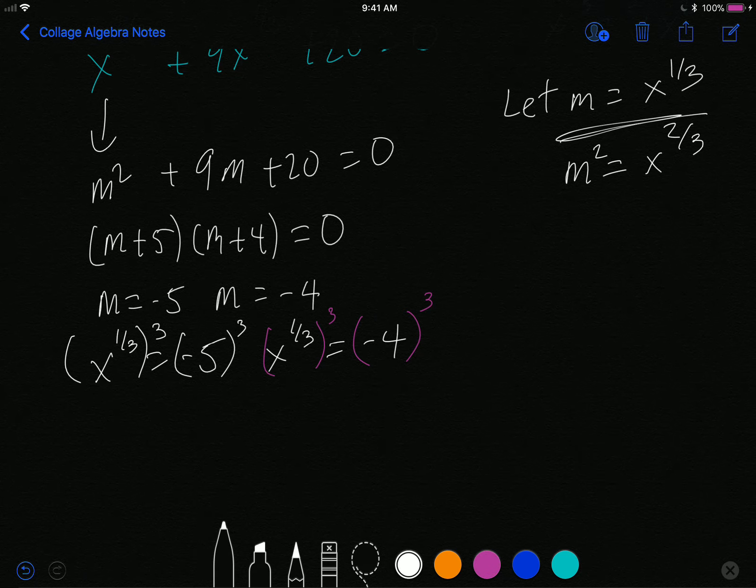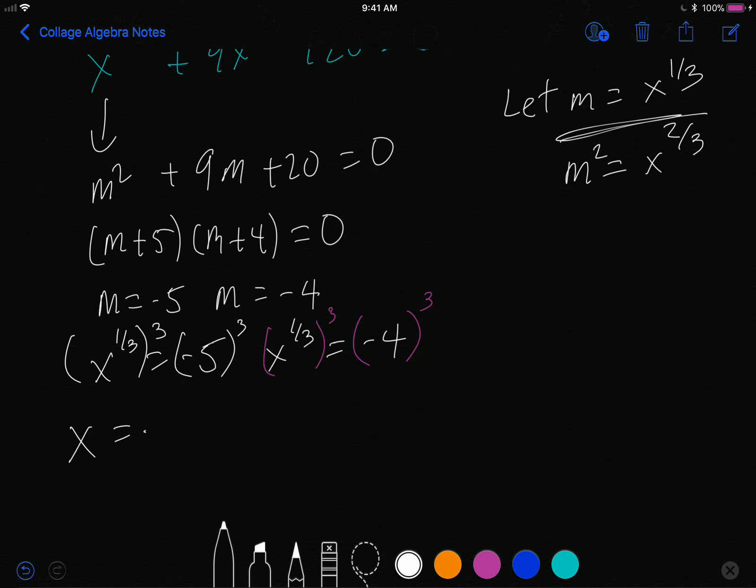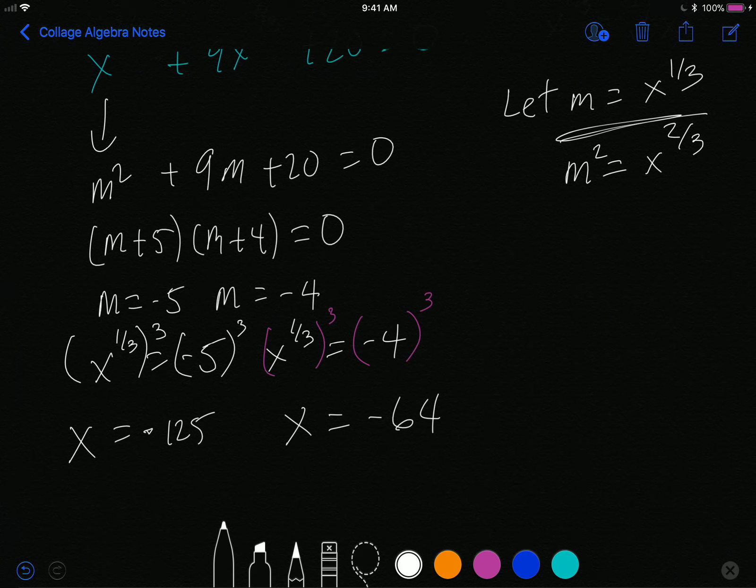And so this simplifies to just x. And that's negative 125. This simplifies to x. And that's equals to negative 64. And that right there are your solutions.